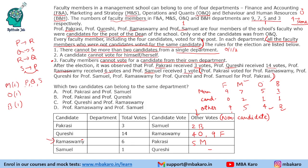Similarly, Q voted for S, meaning Q and S cannot be from the same department. Since Q is from M&S, S cannot also be from M&S. Therefore P and Q are the two candidates from M&S department. So Pakrasi and Qureshi belong to Marketing and Strategy.